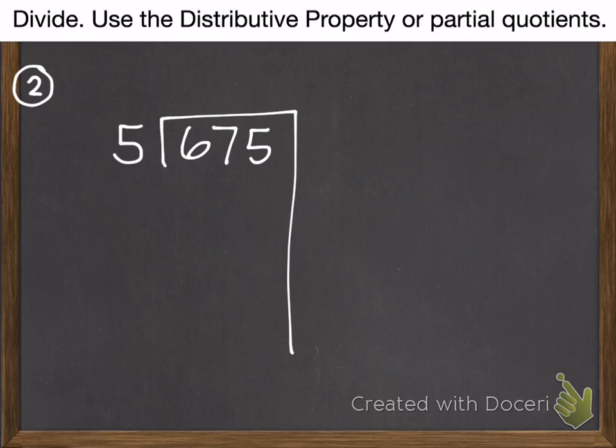Number two: divide, use the distributive property or partial quotients. So 675 divided by 5. Go ahead and pause that.